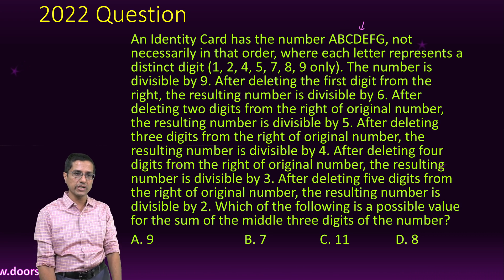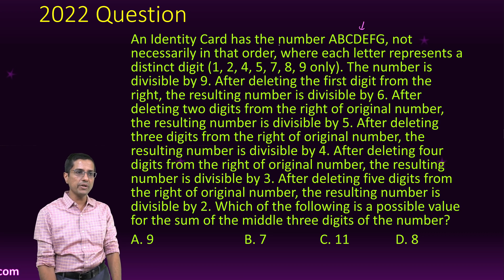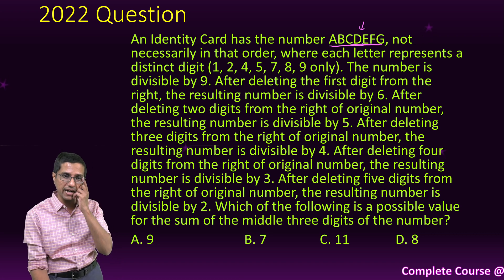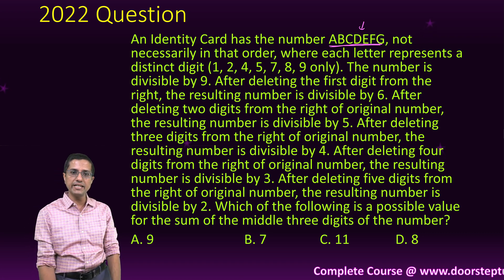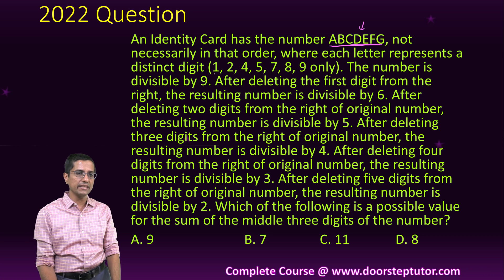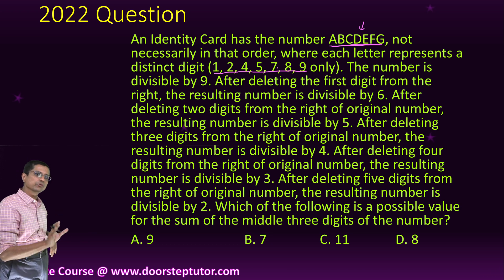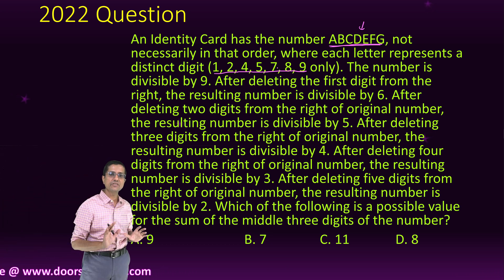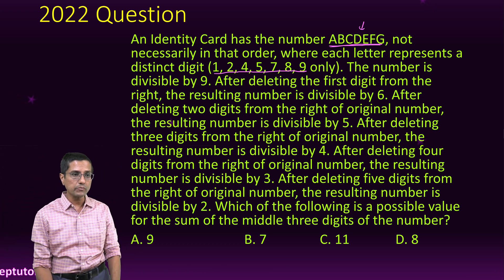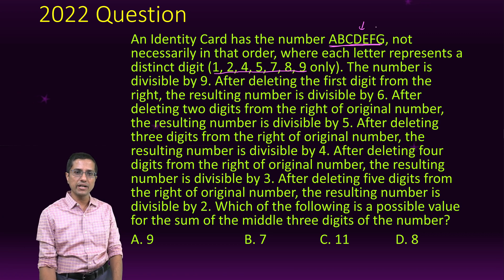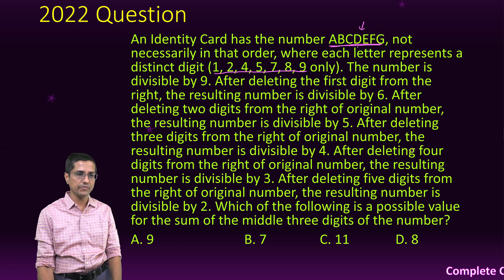This is actually a very simple question. What we have been told is that there is an identity card which has the digits of the numbers in the identity card are A, B, C, D, E, F, G. And then these digits can be one of these. Notice that there is no 0, there is no 6 in the list of numbers. Now, what we have been told is that this entire number is divisible by 9.